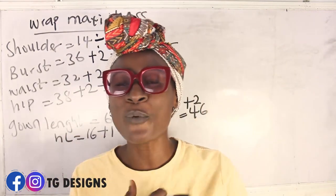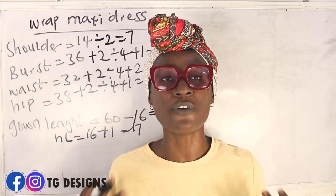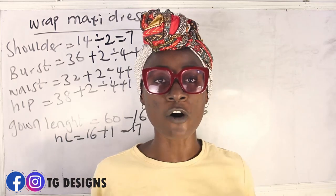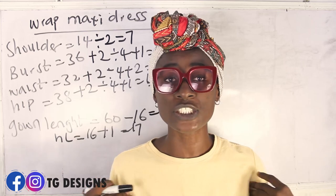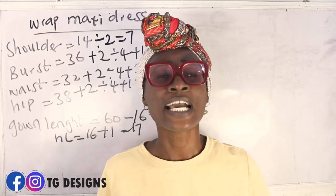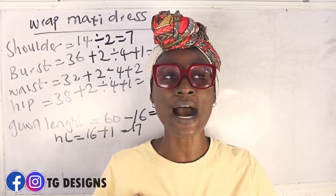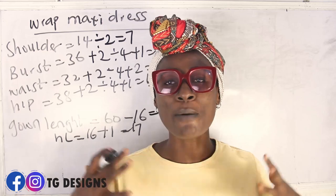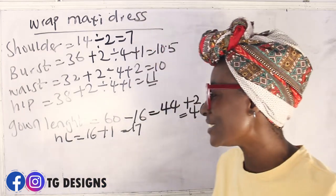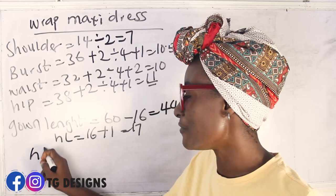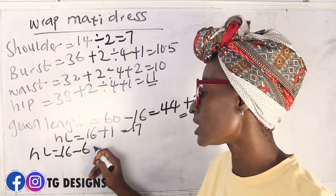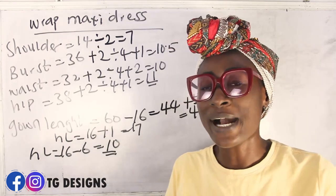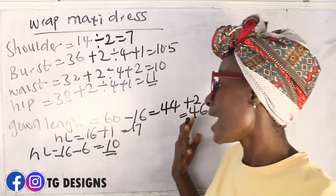We also want this wrap dress to be off-shoulder. You need to determine how many inches off you want to take. You can take off 2, 4, 5, or 6 inches — it depends on how off you want your off-shoulder to be. I'm going to deduct 6 inches because I want mine to be really off. So our upper length is now 16 minus 6 equals 10 inches for the upper part.